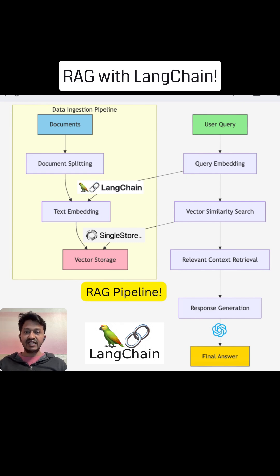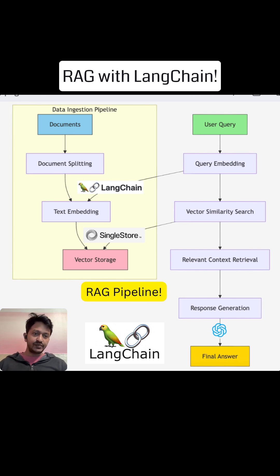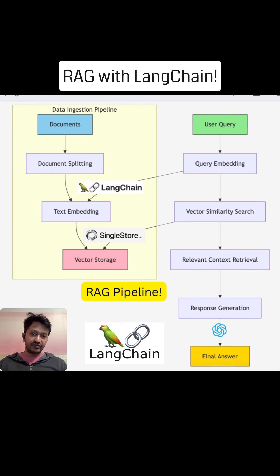Their context window size is also very limited, and that's why they usually hallucinate. They mostly can't retrieve live information. This behavior of LLMs is known as hallucinating behavior.